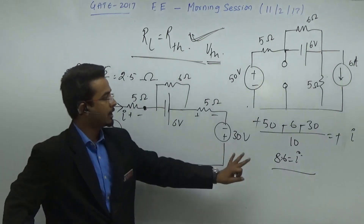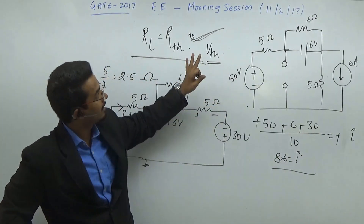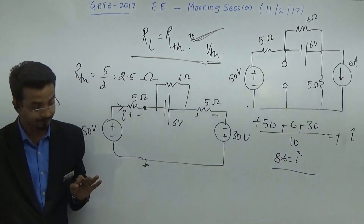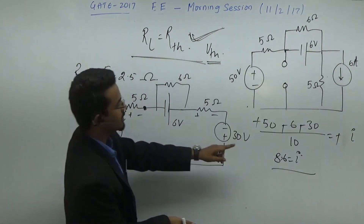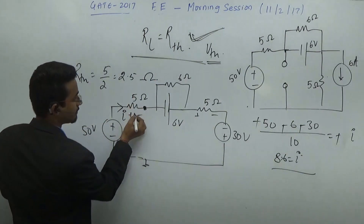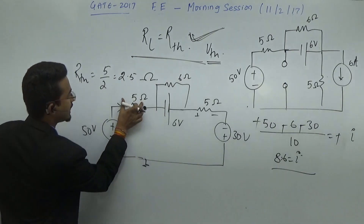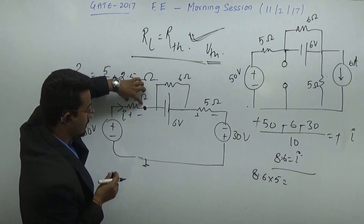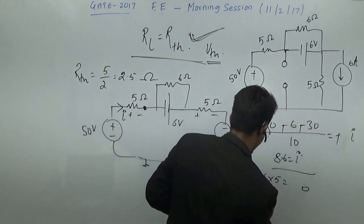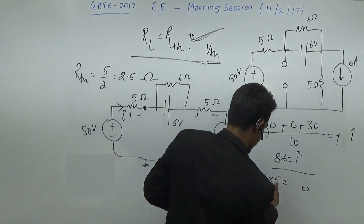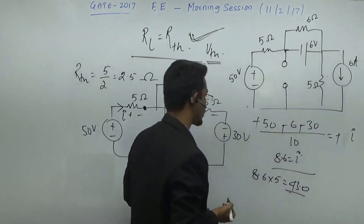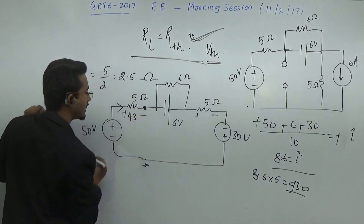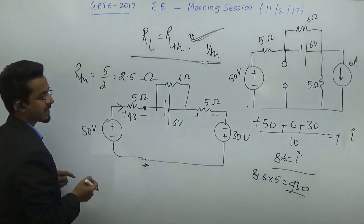It is basically a memory-based question, so we are not guaranteed this will be exact. But the approach must be like this. Whenever you get this current i, multiply with the resistance: 8.6 into 5. That potential will be 43 volts — plus and minus — 43. Because the current is 8.6 ampere and the resistance is 5.